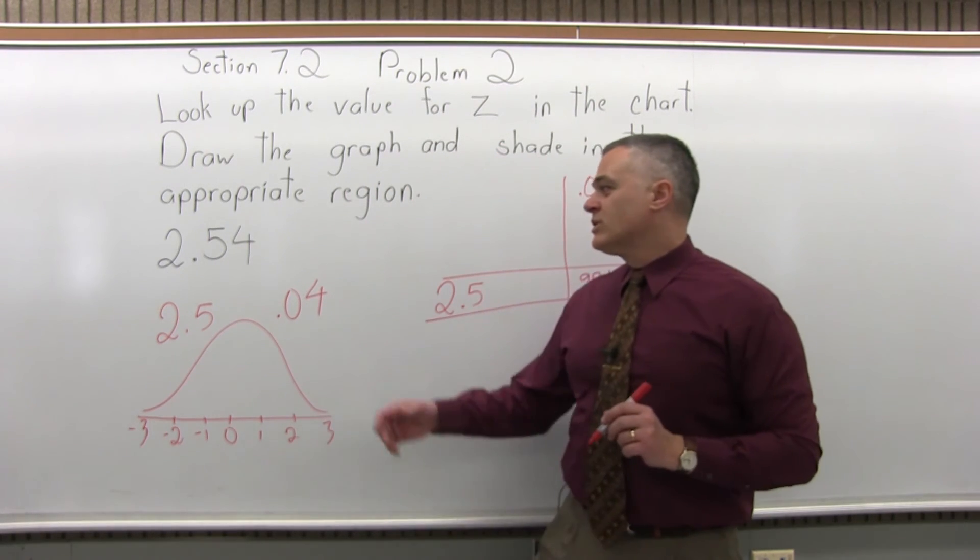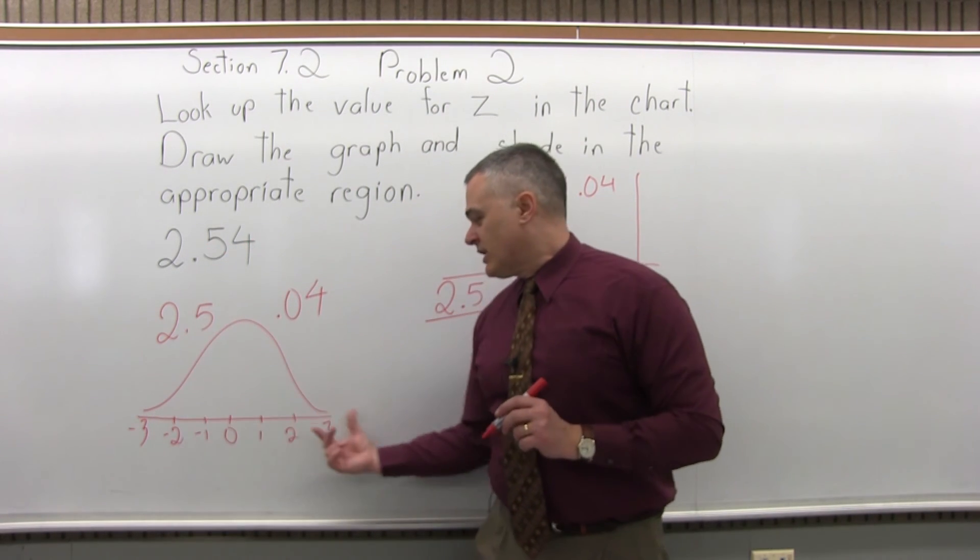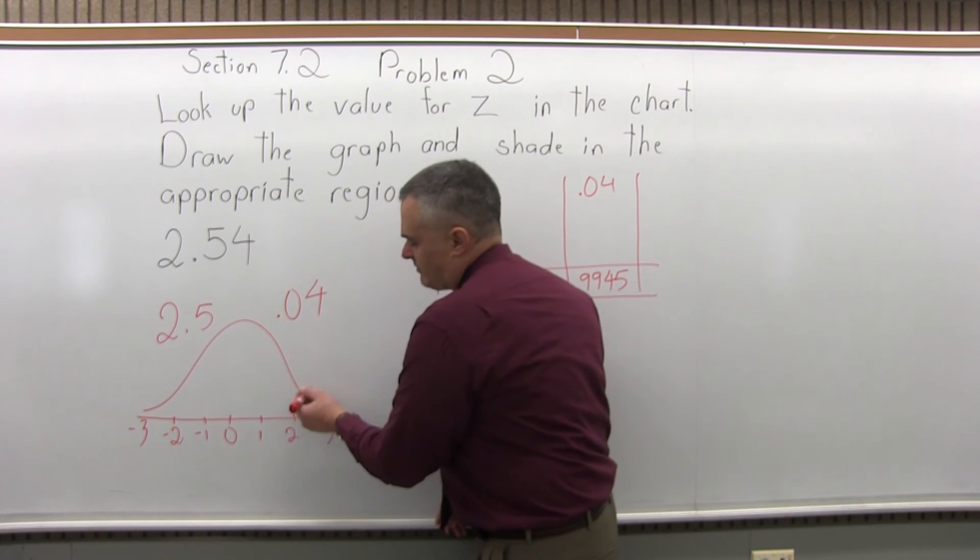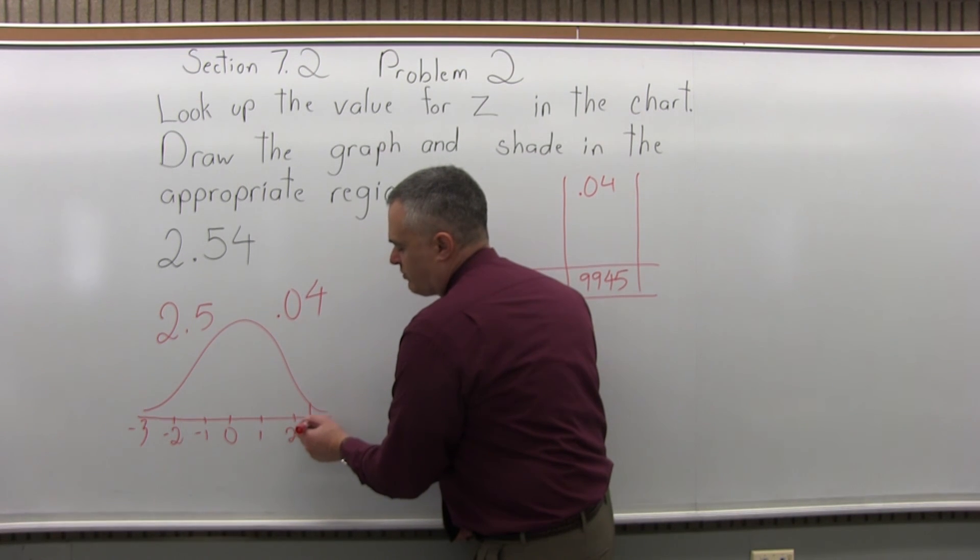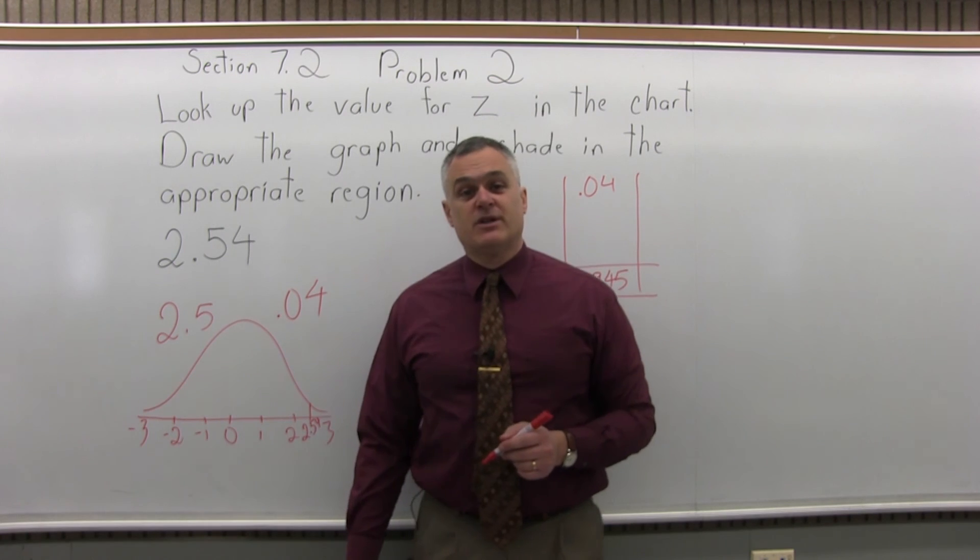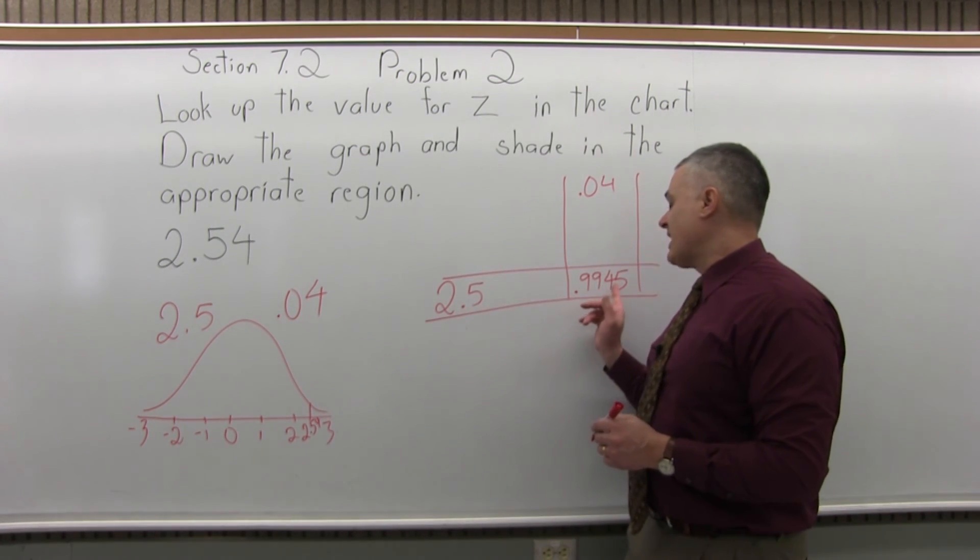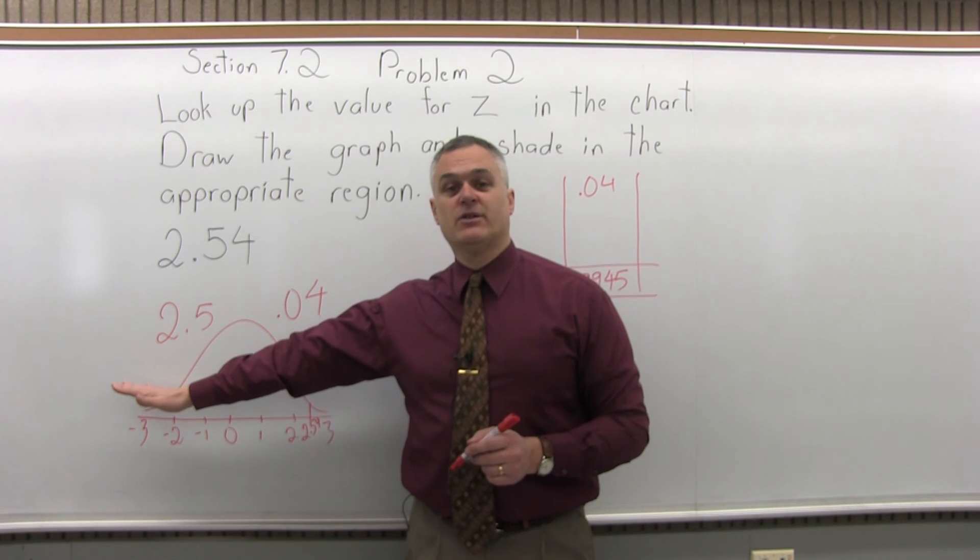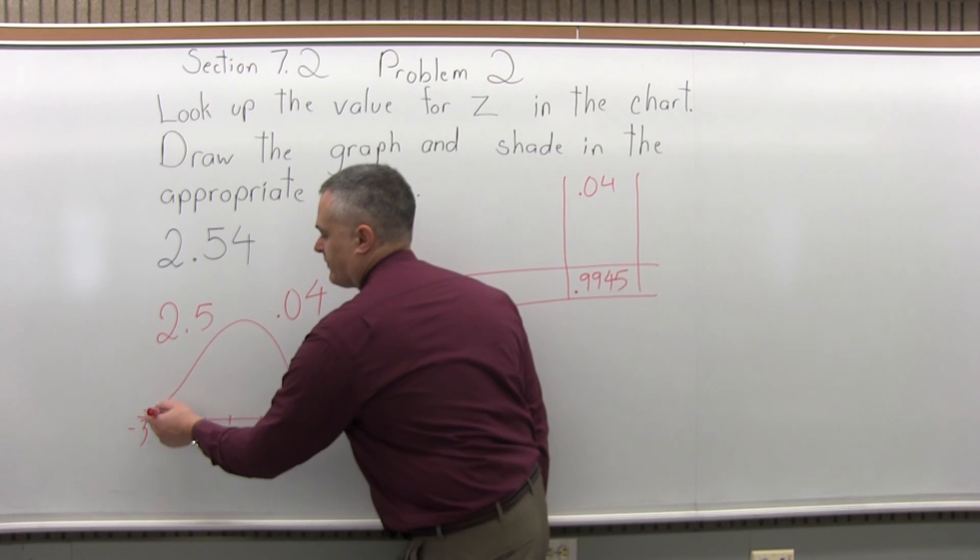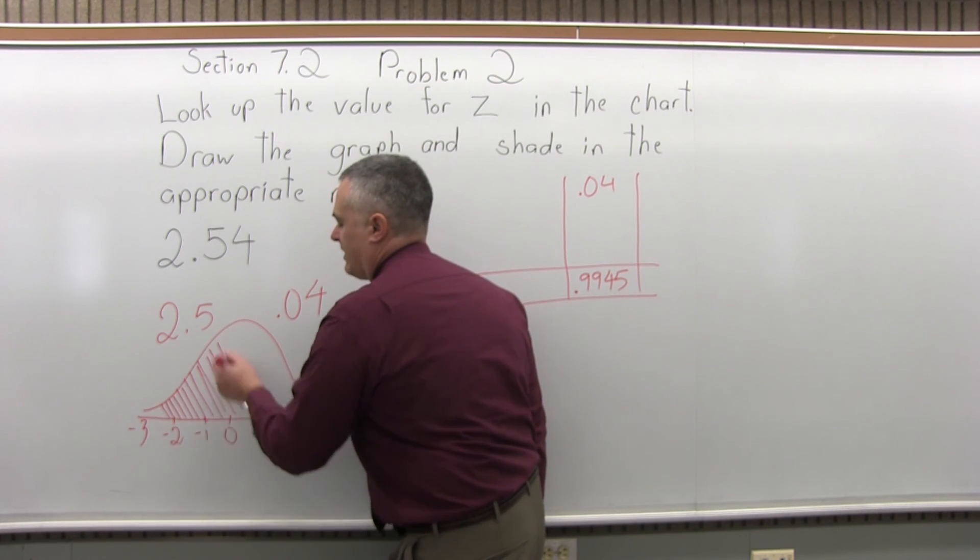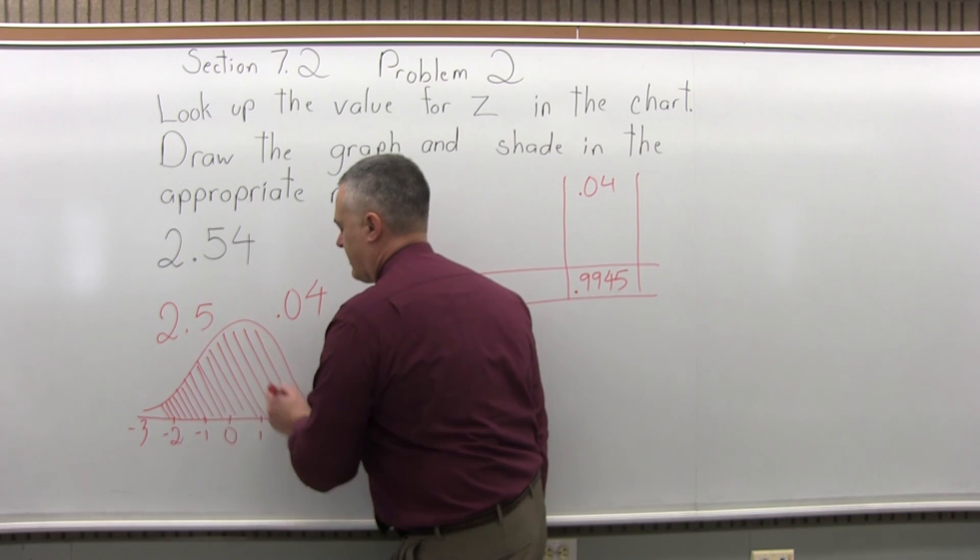So, what we've looked up, 2.54 goes along that bottom. Between 2 and 3 is 2.5, and 2.54 is essentially 2.5, so we can figure 2.54. And now, the number from that chart that we found, .9945, is the probability of being to the left of the value that you just looked up.